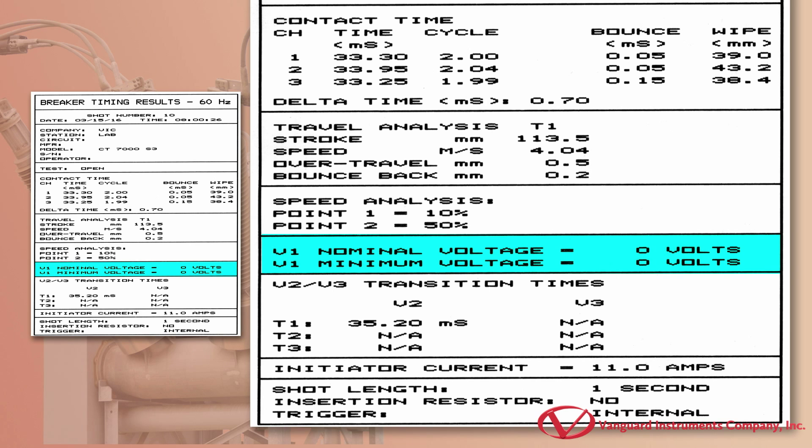The V1 voltage measurement is shown here. The CT7000S3 will detect the on-off voltage transition on the V2 and V3 voltage input channels. It can detect up to three voltage on-off events and record the times.